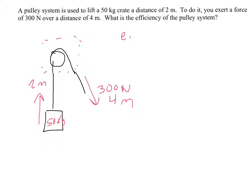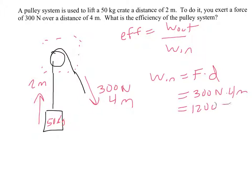So as before, our efficiency formula is that it's work-out over work-in. So now we just got to figure out what's our work-in, what's our work-out. So our work-in is the force that we exert over the distance we exert it. So we exert a force of 300 newtons over 4 meters, so 1,200 joules is our work-in.